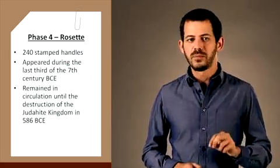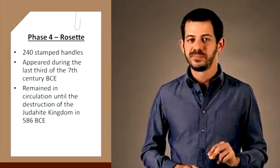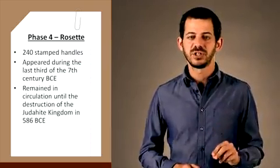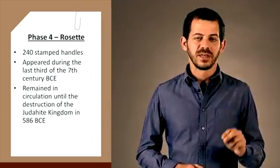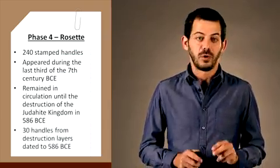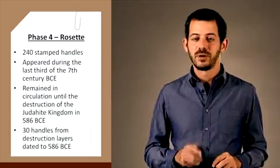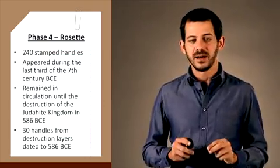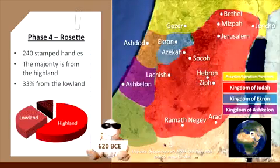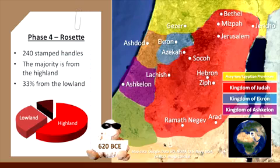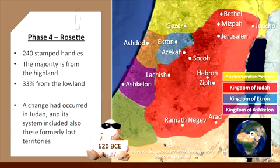The system probably appeared during the last third of the 7th century and remained in circulation until the destruction of the Judahite kingdom in 586 BCE. More than 30 handles were found in the destruction layer dated to the Babylonian campaign, mostly Jerusalem, Lachish, and other sites. Though most of the handles were found in the highlands, one third of the corpus was unearthed in the lowlands. Thus, it seems that a change had occurred in Judah, and its system included also these formerly lost territories.